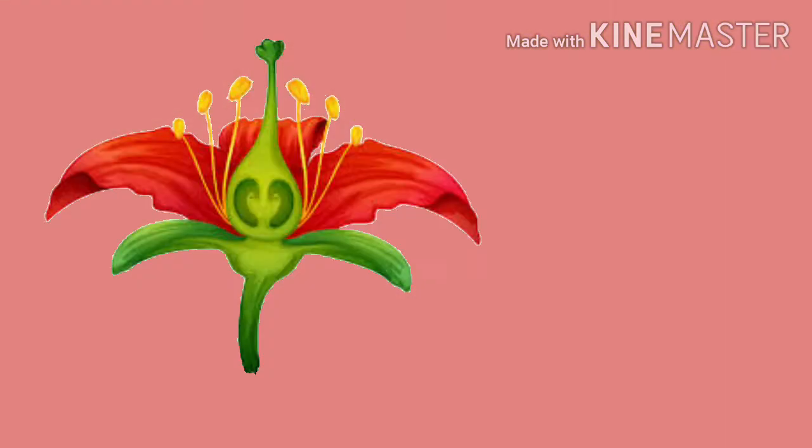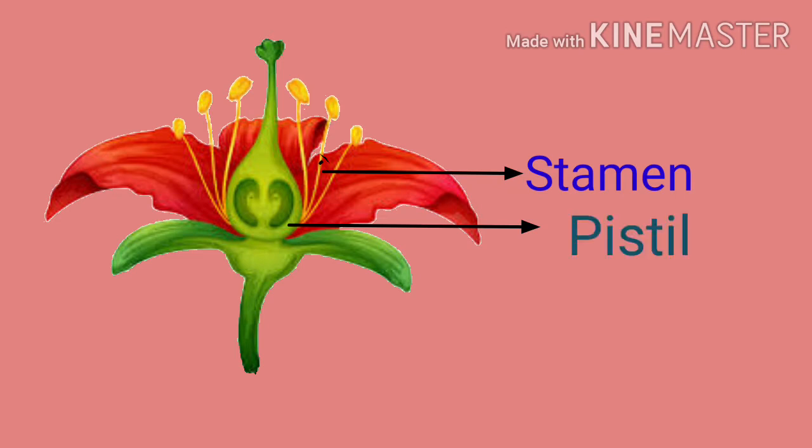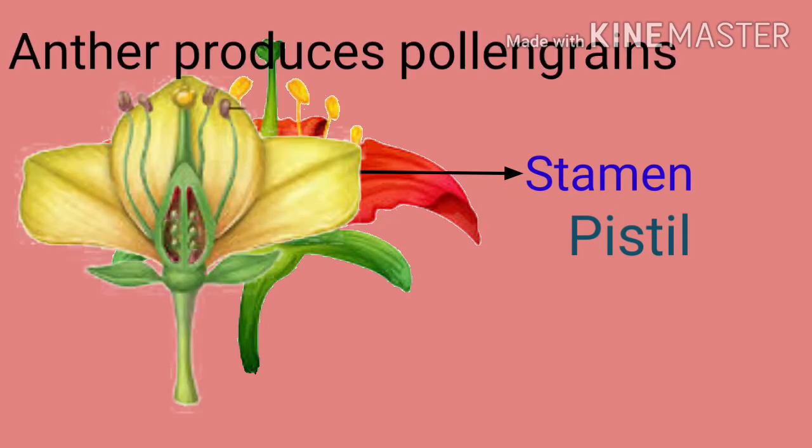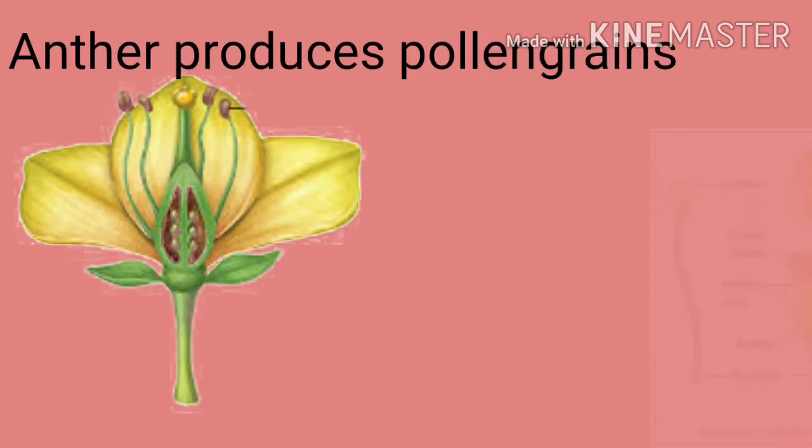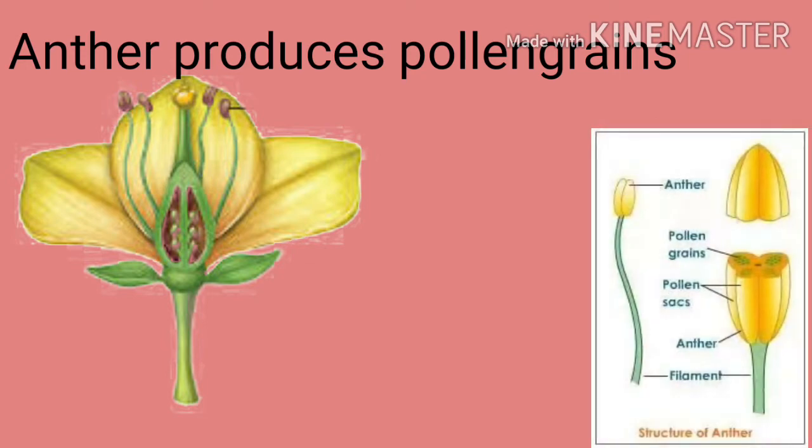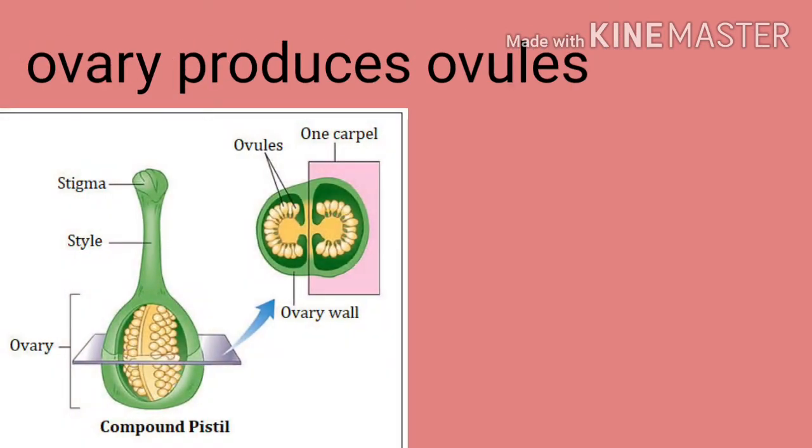Anther and filament make the male reproductive part of the flower known as stamen. Stigma, style, and ovary make the female reproductive part called the pistil. Anther produces pollen grains whereas ovary produces ovules.